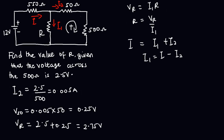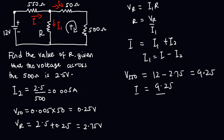We can do that using node analysis. The voltage drop across the 550 ohms resistor will be equal to 12 volts — the voltage at this node — minus the voltage at the other node, which is Vr. So that will be 12 minus 2.75, giving us 9.25 volts. This is the voltage drop across the 550 ohms resistor. So I equals 9.25 divided by 550, which gives us a value of 0.0168 Amperes.